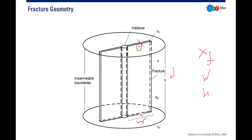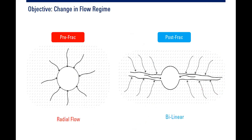Why do we perform hydraulic fracturing? We have several objectives. Of course, the main goal is to enhance the productivity of our well, but we can achieve this productivity improvement through several specific objectives. The first objective is to change the flow regime.